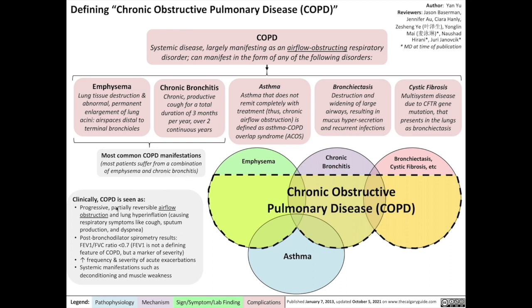Clinically, COPD is seen as progressive, partially reversible airflow tract obstruction and lung hyperinflation, causing respiratory symptoms like cough, sputum production, and dyspnea. We'll get into the reasons for why these symptoms present the way they do in later videos about COPD.